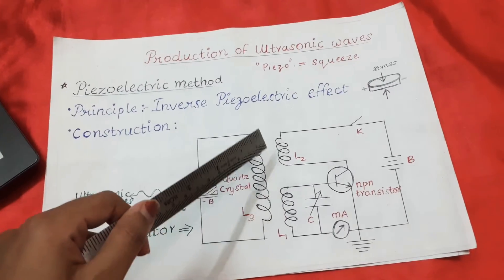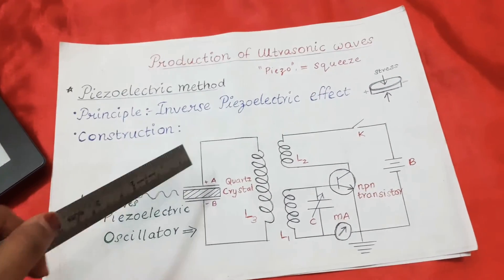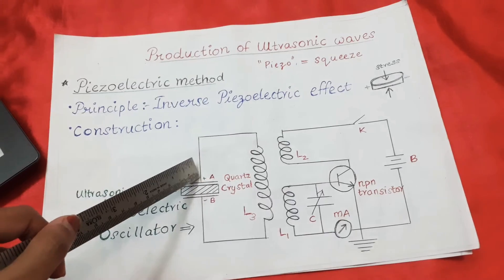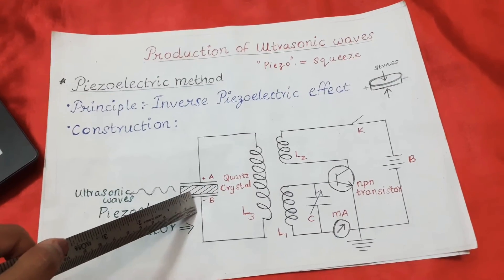Another coil L2 is connected to the collector terminal and acts as a feedback coil. There is also a large inductor coil L3 that acts as a secondary coil, whose ends are connected to electrodes A and B, which make electrical contact with the specimen crystal — a piezoelectric quartz crystal sandwiched between the two electrodes. Whatever current flows through the inductor L3 will generate a potential difference across this piezoelectric crystal.